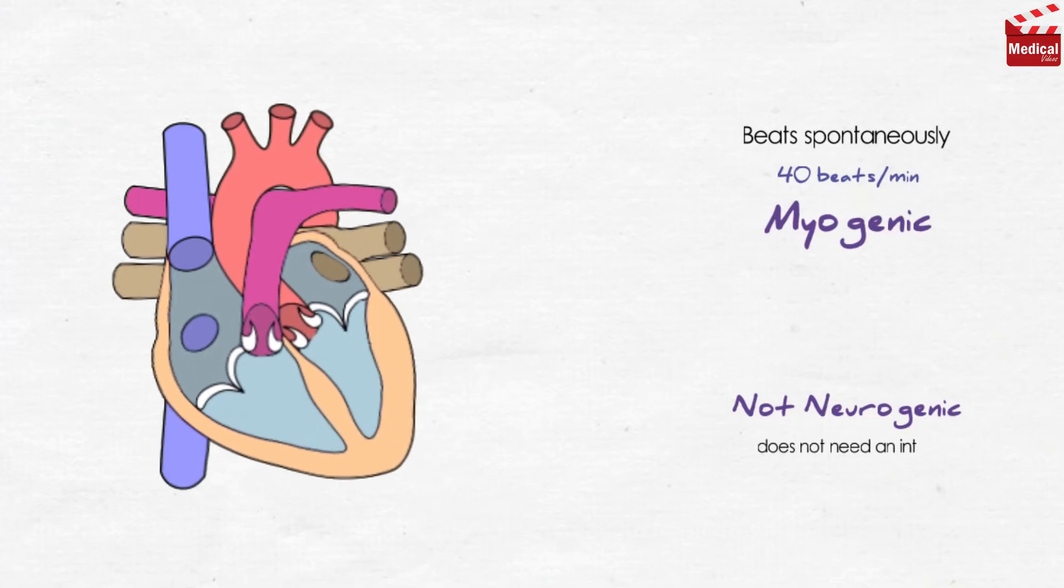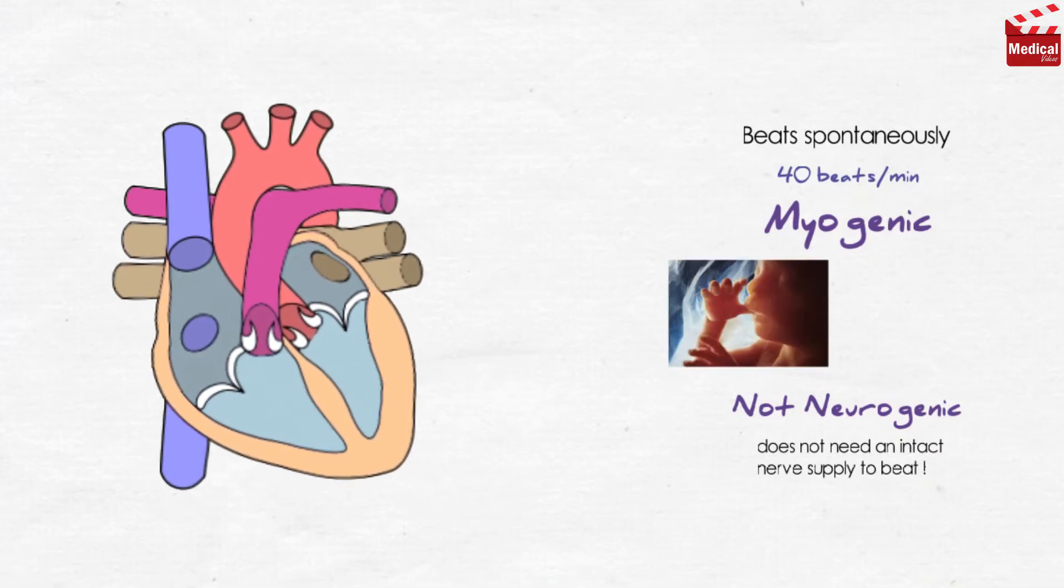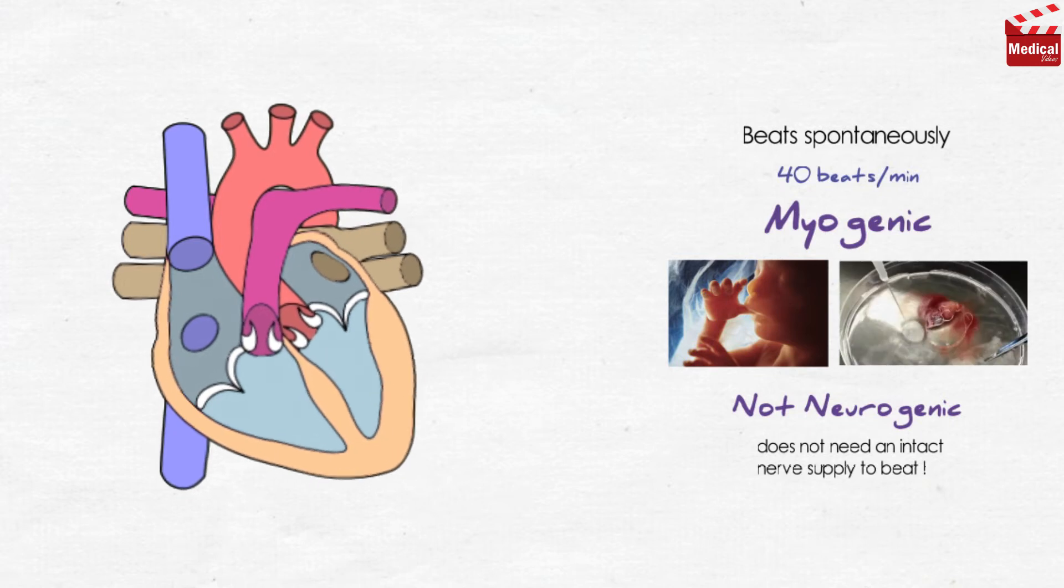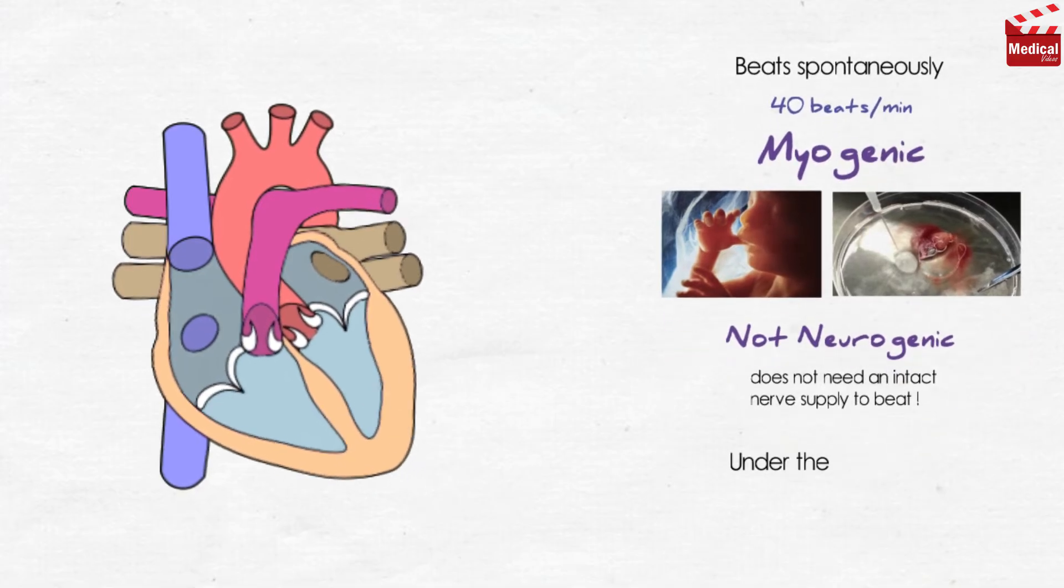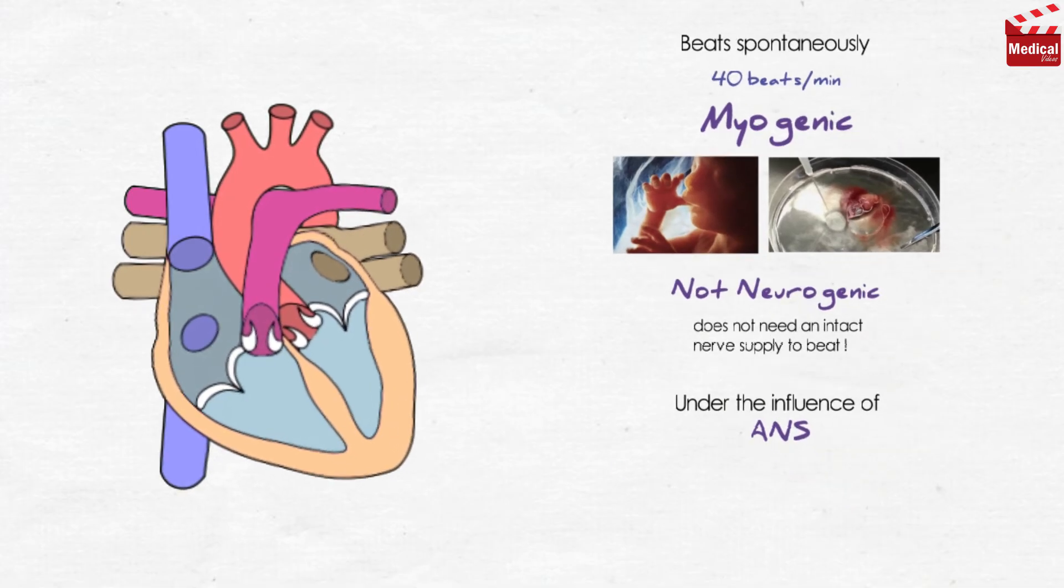That means that it does not need an intact nerve supply to beat. And the evidence is that the heart of the fetus during pregnancy beats before the heart is innervated, and also isolated frog's heart can beat spontaneously. Although the rhythmic beating of the heart is myogenic, it's still under the influence of autonomic nervous system by its two branches.